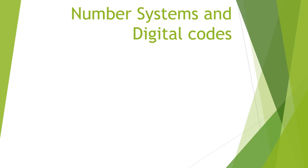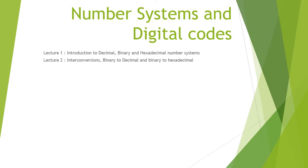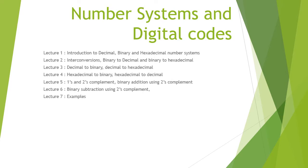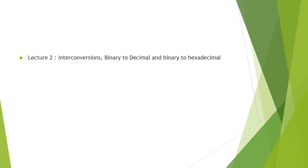In the previous lecture we studied about the number systems and digital cores. We discussed the decimal number system, binary number system, hexadecimal and octal number system. Now, in this particular lecture we are going to discuss their interconversion — that is, how to convert a binary number into a decimal number and a binary number into a hexadecimal number.